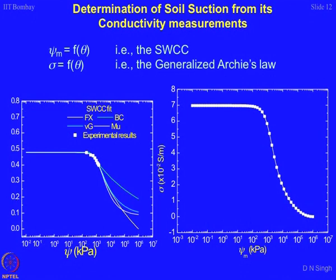At the same time, sigma is a function of theta — conductivity is also a function of volumetric moisture content. This is the generalized Archie's law. So if you mix these two together — psi_m is a function of theta, and sigma is a function of theta — what it ends with is that psi_m is a function of sigma. This indicates I can measure suction of the soil if I can measure its conductivity. This was in short the thesis of Anumantra, who has published quite extensively in different journals using this philosophy.